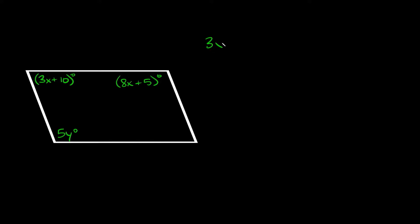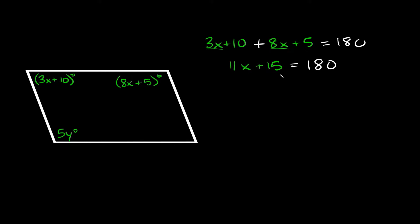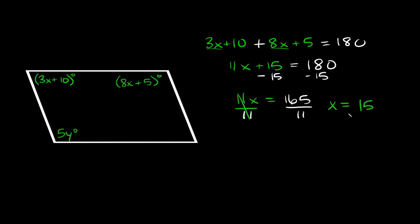We can say that 3x plus 10 plus 8x plus 5 is equal to 180. Combining like terms: 3x and 8x is 11x, and 10 and 5 is 15, so 11x plus 15 equals 180. Subtracting 15 from both sides gives us 11x equals 165. Dividing both sides by 11, those cancel out and we get x is equal to 15.